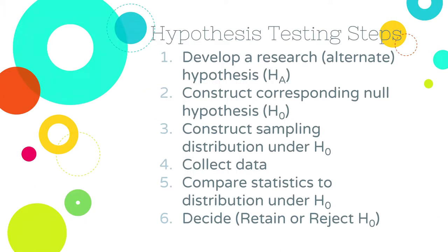Hypothesis testing really involves six steps. Some people shorten this to four steps; I went on the side of more detail to really get across the statistical process. The first thing we do is develop a research hypothesis — we call this an alternate, or sometimes alternative, hypothesis. This is basically a statement of what you expect. For example, if I were going to compare boys and girls and their GPAs, I might say I expect girls to have higher GPAs than boys. That is a testable statement — a statement of an expected effect.